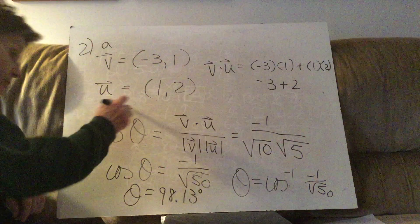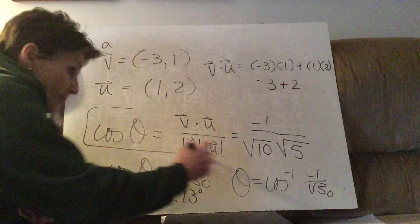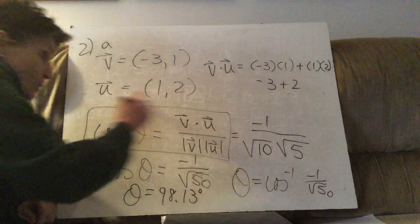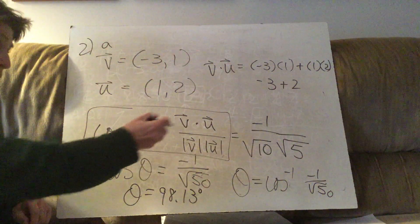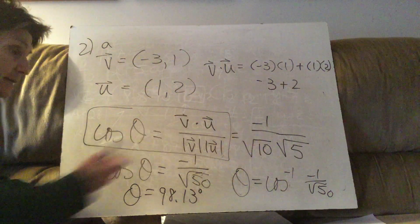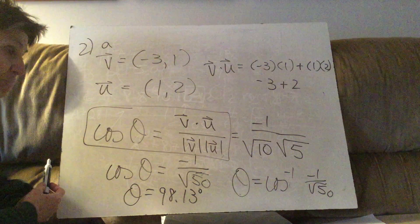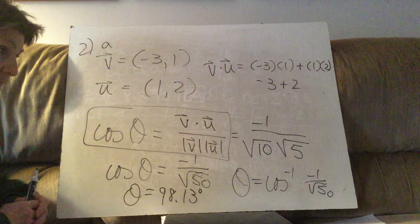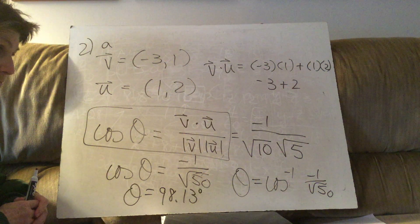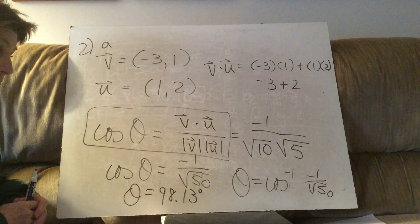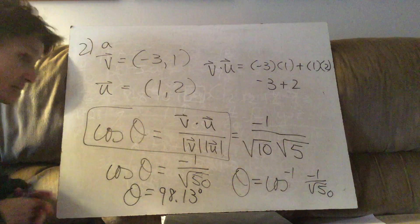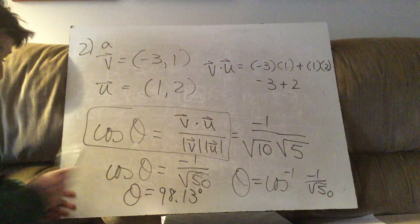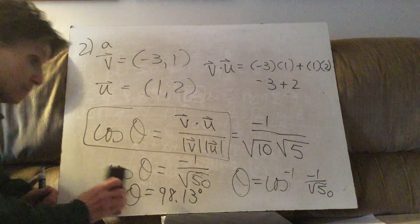Here's our formula: find the dot product, divide it by the product of the magnitudes, then take second cosine and that's your answer.